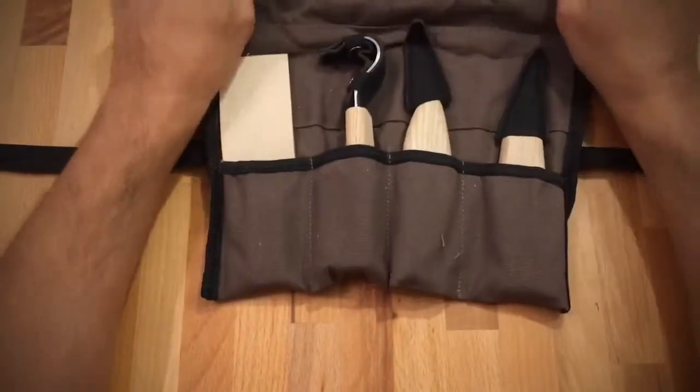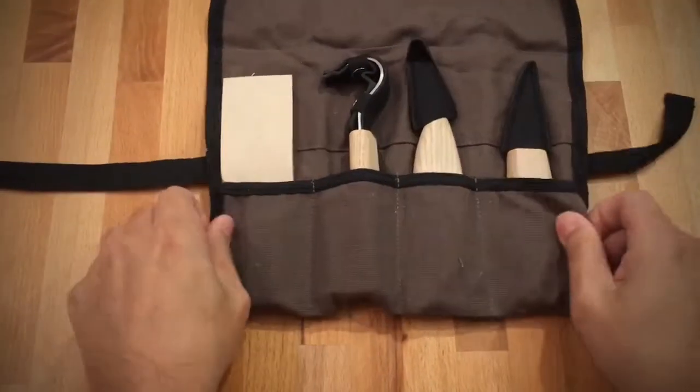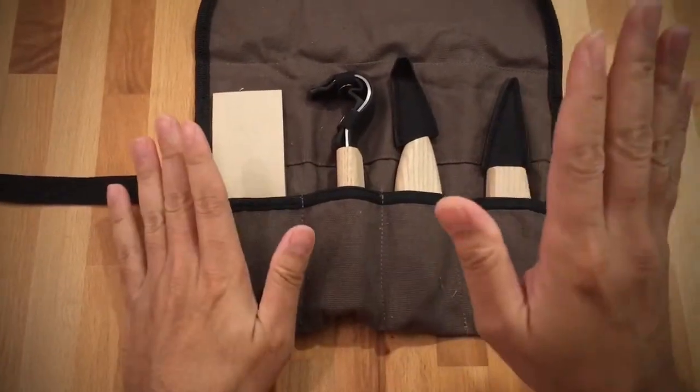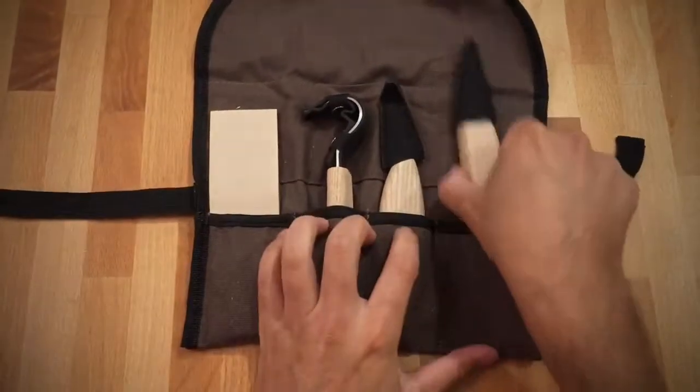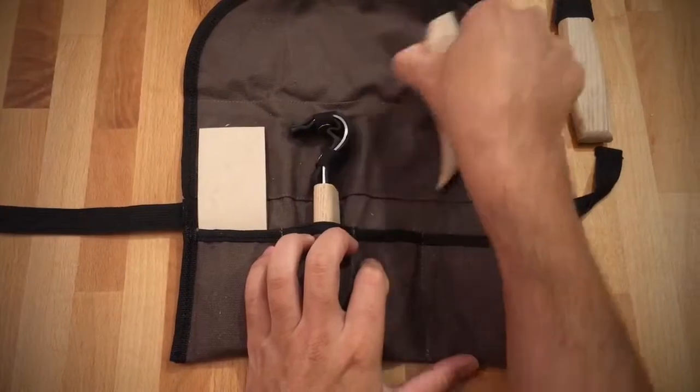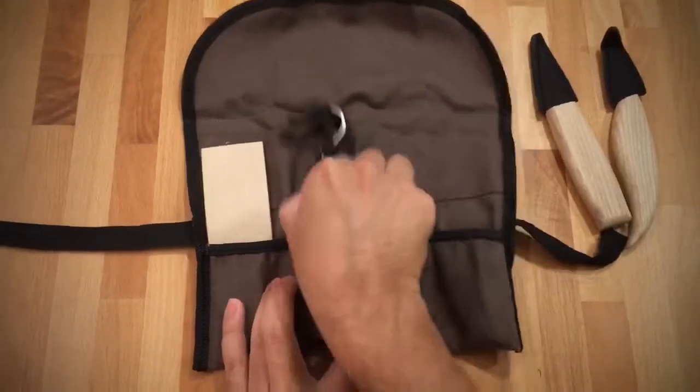First we have a canvas roll bag, a tool roll bag. You can use it with knives, which we have here, or tools. So these are the blades. I will cover these in a second. I'm putting it to the side.